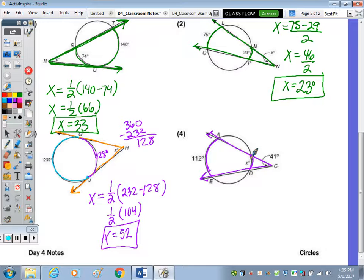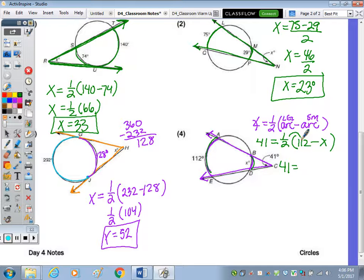And so let's write the theorem. The angle is half of arc minus arc. And it's the large minus small. So in place of the angle, we're going to put the 41 degrees. So 41 equals half. The larger arc is 112 minus the smaller arc of X.